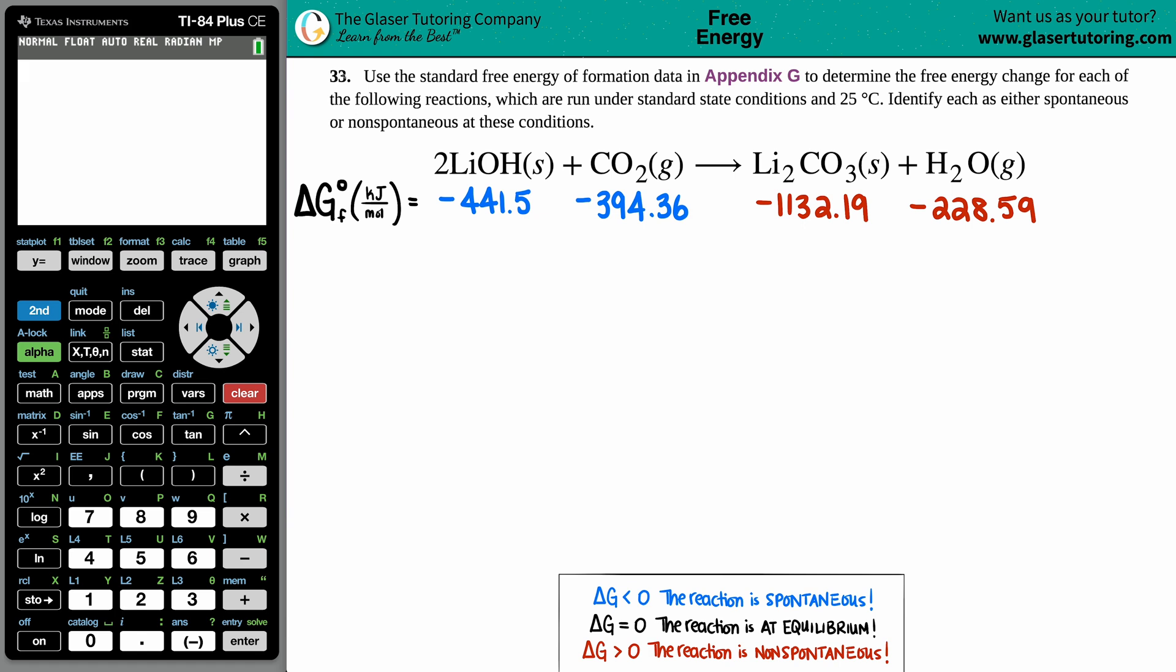Number 33: Use the standard free energy of formation data in Appendix G to determine the free energy change for each of the following reactions which are run under standard state conditions at 25 degrees Celsius. Then identify each as either spontaneous or non-spontaneous at these conditions. The key thing we have to find is the free energy change.